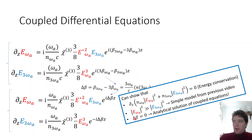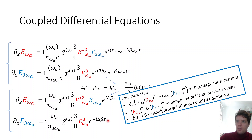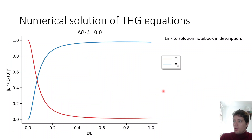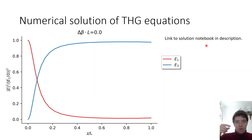Finally, in the exact case where delta beta equals zero — perfect phase matching — we can actually solve this set of coupled differential equations analytically, though we won't do that here. We'll solve them numerically instead, and I've linked a series of videos in the description for more detail. I've also written a short Python notebook, linked in the description, which you can play around with to explore these solutions yourself.